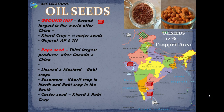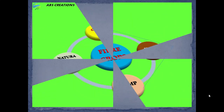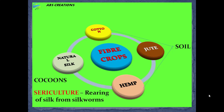Sugarcane and oil seeds come under the category of cash crops. Now we will move on to the fiber crops of India. Fiber crops are cotton, jute, hemp and natural silk — the four important major fiber crops grown in India. The first three crops — cotton, jute and hemp — are grown in soil, whereas natural silk is obtained from cocoons of silkworms fed on green leaves, especially mulberry. The rearing of silkworms for silk is known as sericulture.